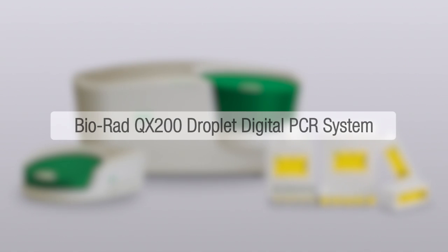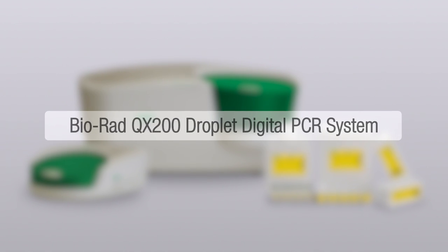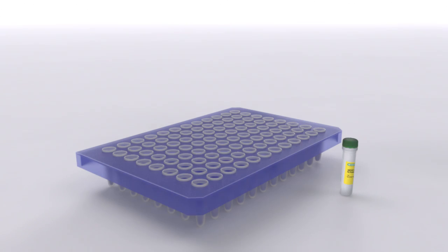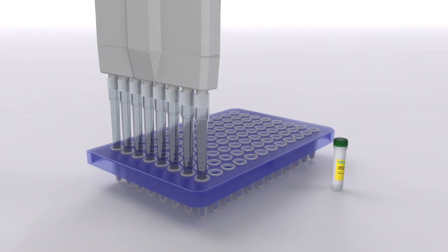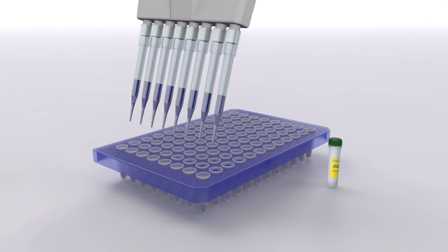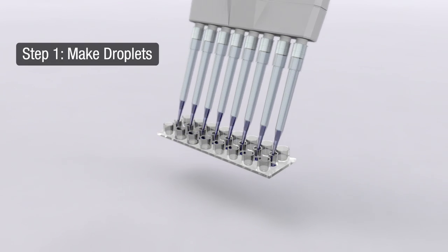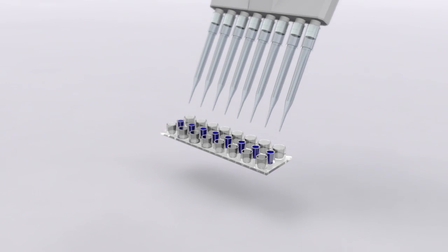Now, let's look at how the Biorad QX200 droplet digital PCR system performs digital PCR with unrivaled precision and sensitivity. The QX200 system uses a simple workflow that requires minimum hands-on time and procedures that are easy to perform. First, 20 microliters each of 8 prepared samples are transferred to the droplet generation cartridge.